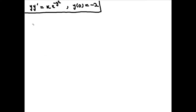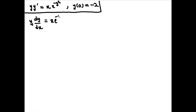We're going to solve this initial value problem. First thing I'm going to do is rewrite this in a familiar notation. I'm going to rewrite this as y dy/dx equals x e to the minus y squared.